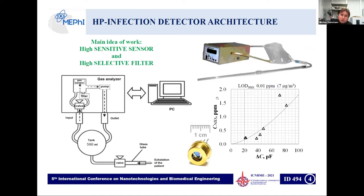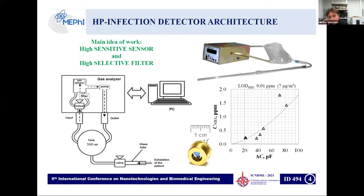Here I present the view of a prototype of the device, which contains electronic blocks, sensors, and a tank for storage of the exhaust gases produced by the patient. Here is a block scheme of our device and the sensitivity to ammonia of our field-effect sensors. Typically the sensors have high sensitivity to ammonia, located in the sub-PPM range.